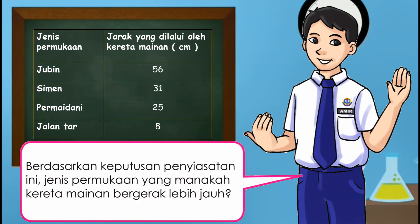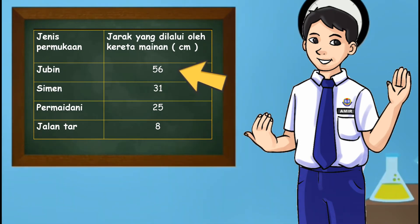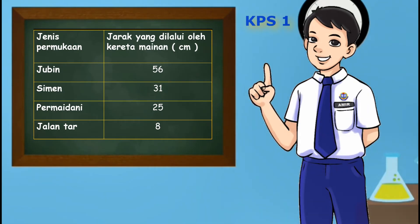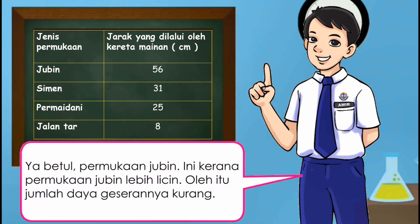Berdasarkan keputusan penyiasatan ini, jenis permukaan yang manakah kereta mainan bergerak lebih jauh? Ya betul, permukaan jubin. Ini kerana permukaan jubin lebih licin, oleh itu jumlah daya geserannya kurang.